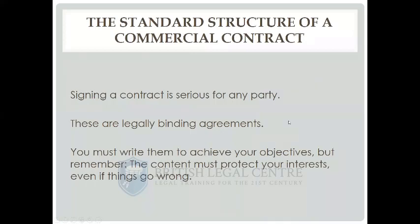We're going to look at the standard structure of a commercial contract. Signing a contract is serious for any party - they are legally binding agreements. You must write them with two things in mind: one, to achieve your objectives and get what you want; but that's only half the job. You must remember that things can always go wrong, so you must write the content to protect your interests even if things go wrong. You write the contract on the basis of what can go wrong and write remedies for these problems into the contract.